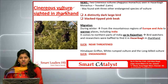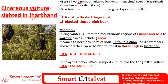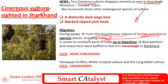The second article is Cinereous vulture cited in Jharkhand. Two Cinereous vultures were seen in Hazaribagh, Jharkhand. This indicates a good environment and enough food available for these vultures to thrive in Hazaribagh. Regarding their migration pattern, during winter months they migrate from mountainous regions of Europe and Asia to warmer places including India, usually coming to northern parts up to Rajasthan. Sighting them in Jharkhand is what makes this newsworthy.